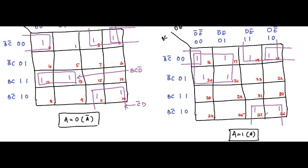For the second K-map: for the quad involving cells 18, 19, 26, 27, the horizontal side gives C-bar and the vertical side gives D — so the term is C-bar D. For the quad involving cells 16, 17, 20, 21, the horizontal side gives B-bar and the vertical side gives D-bar — so the term is B-bar D-bar. For the pair involving cells 16 and 18, the horizontal side gives B-bar C-bar and the vertical side gives E-bar — so the term is B-bar C-bar E-bar.